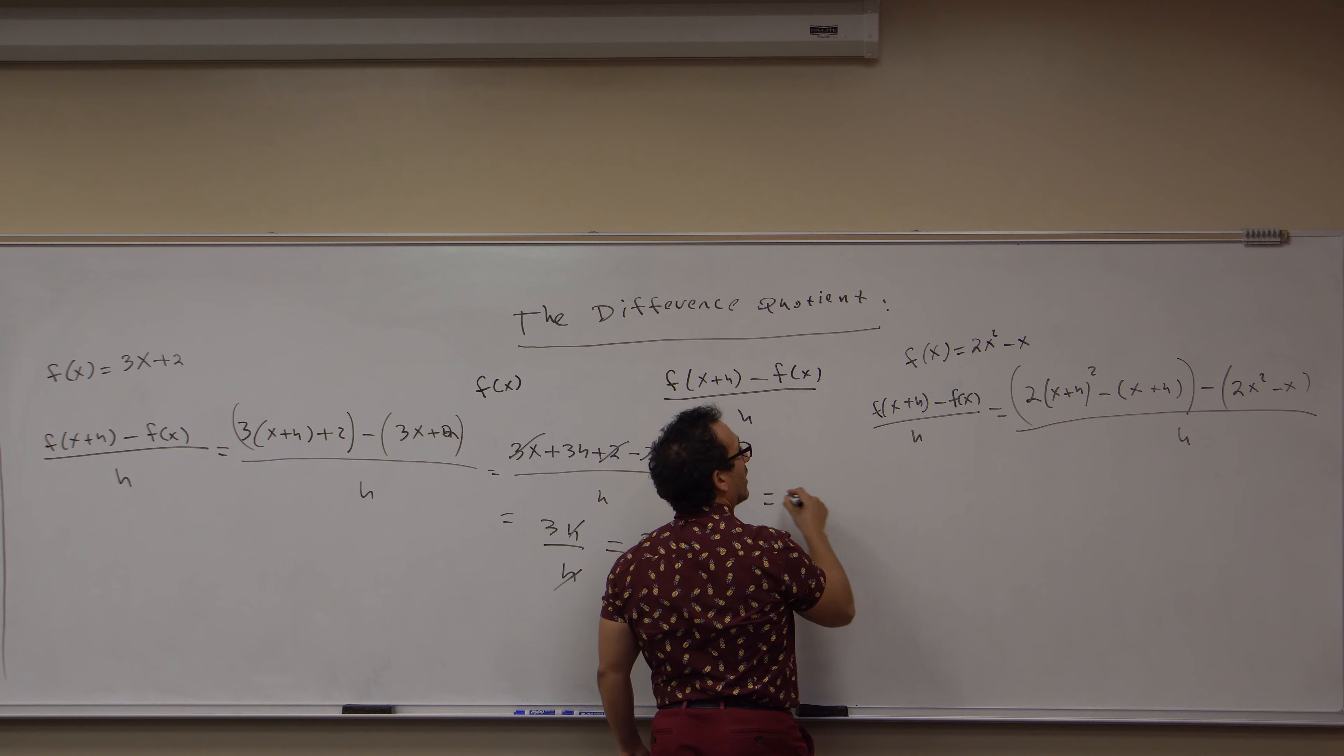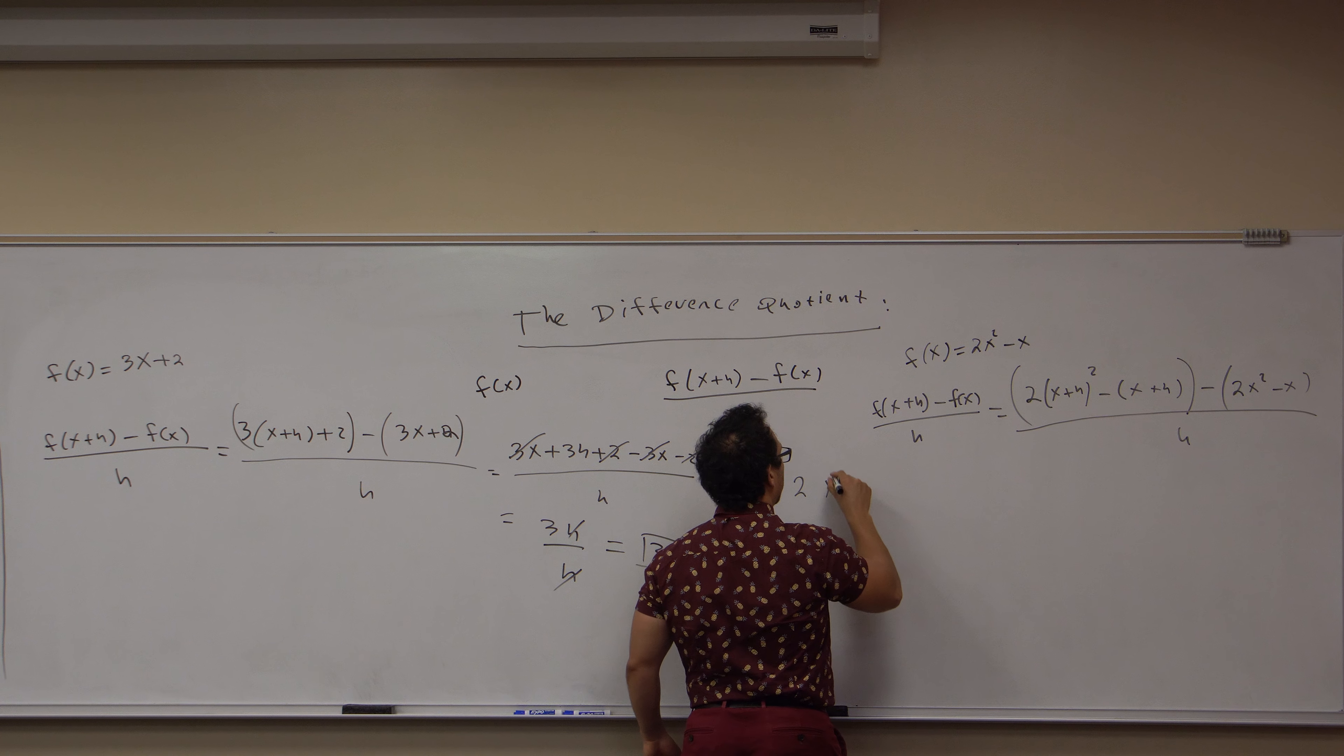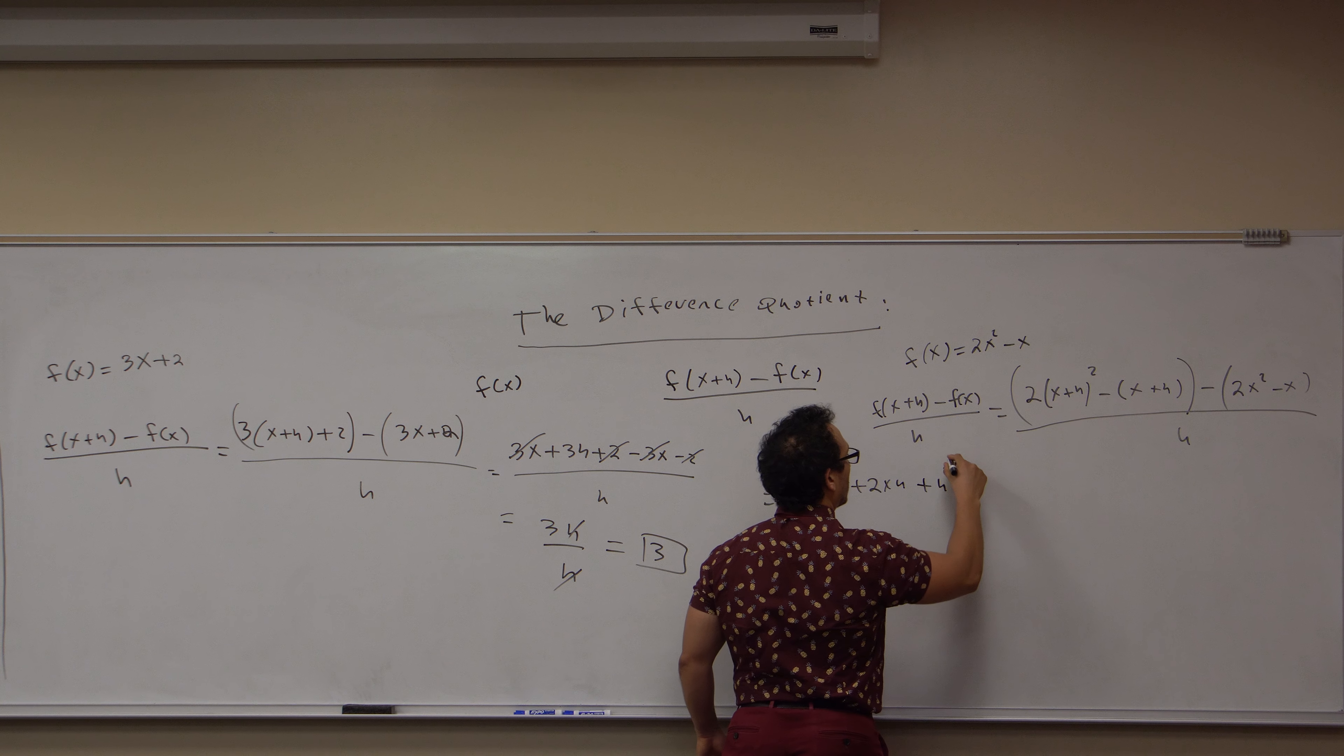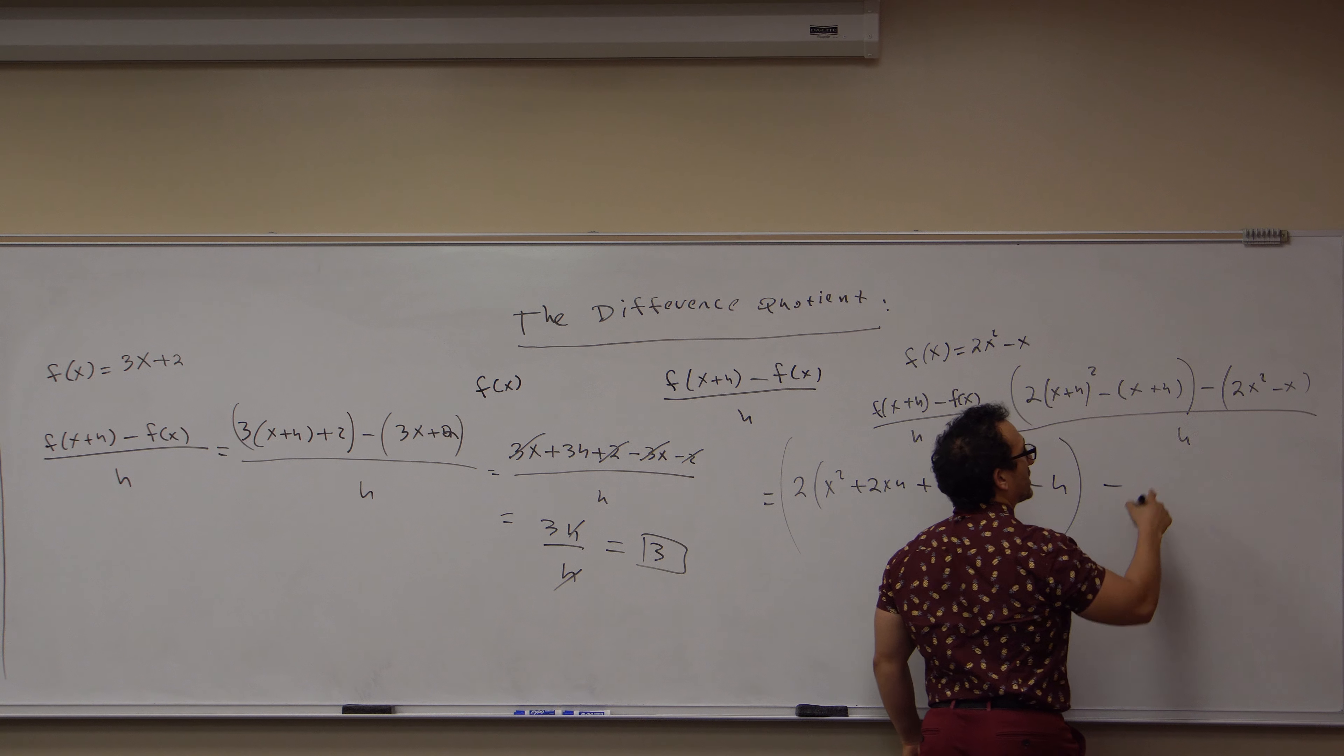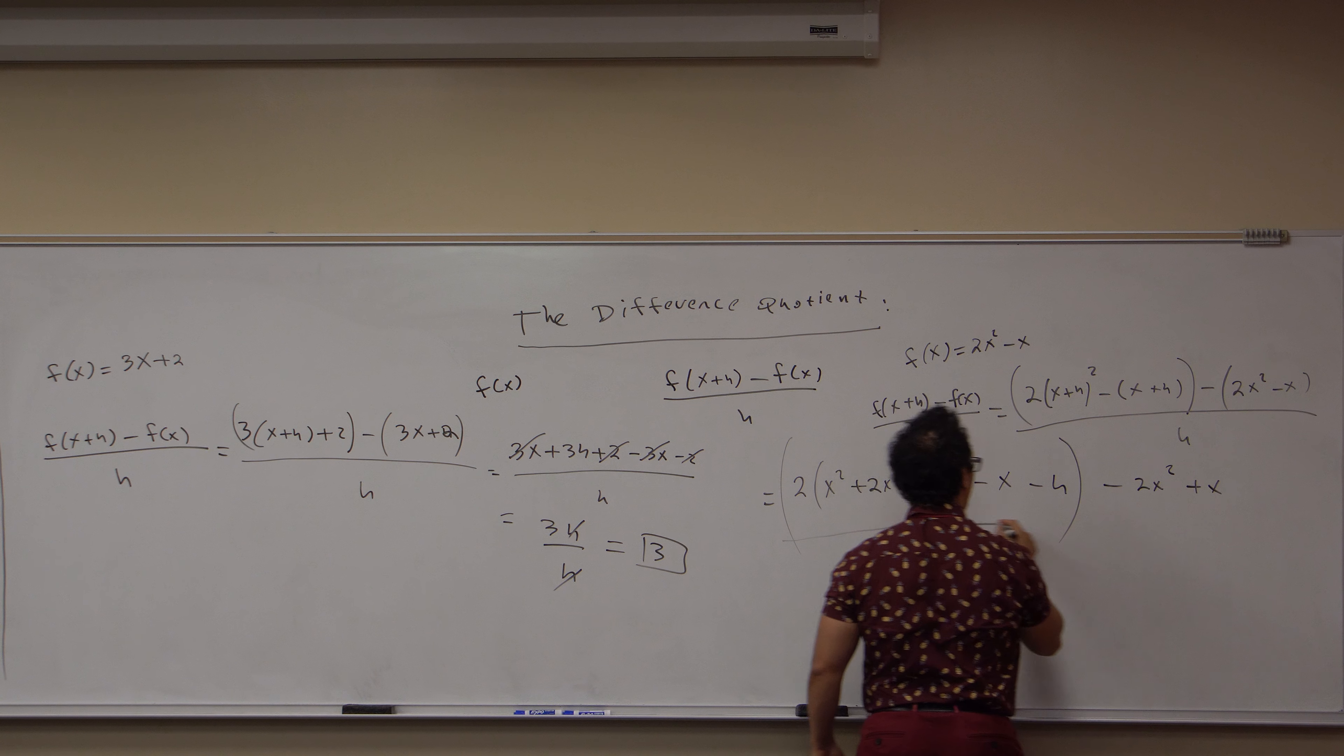Bring this down here. We're going to have to foil that x plus h quantity squared term. This is 2 times x squared plus 2xh plus h squared. And I'm going to distribute this minus. I get minus x minus h. Close these parentheses. I distribute this negative: minus 2x squared plus x, all over h.